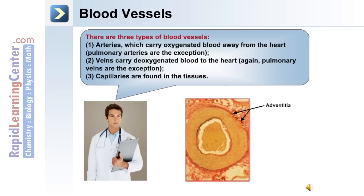The blood vessel wall is made up of three layers. The adventitia is the outer layer, the media is the middle layer, and the intima is the internal elastic layer and contains the endothelium.